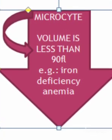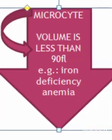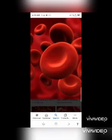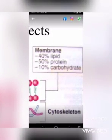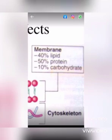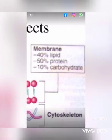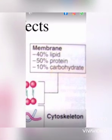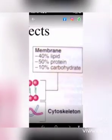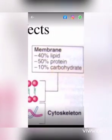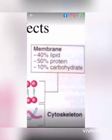The red blood cell membrane is just like any other cell membrane, made up of three main components: protein, lipids, and carbohydrates. Protein is the most predominant, accounting for 50 percent; lipids account for 40 percent; and carbohydrates account for only 10 percent.